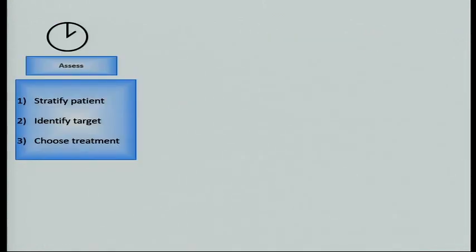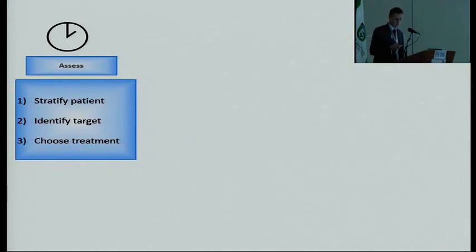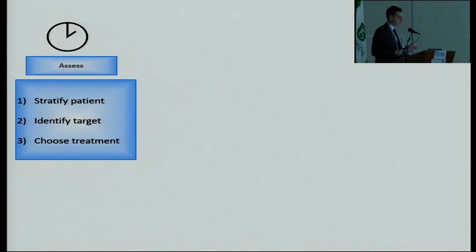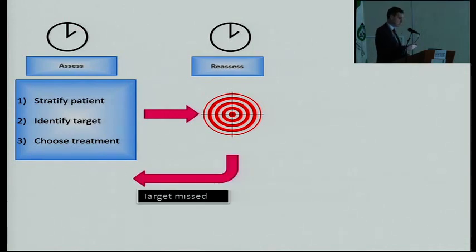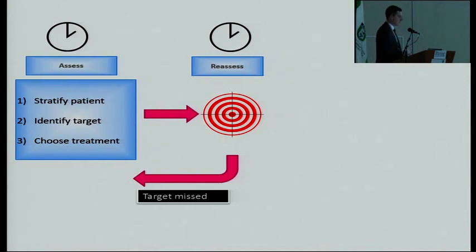Treating to target involves finding our patient and assessing them at the initial time point. We need to do three things: stratify the patient — understand their risk of developing progressive disease; identify a target to aim for; and choose a treatment to achieve that target. We then start treatment, and after a pre-specified interval we reassess. If we haven't reached the target, we go back to the beginning, identify the target again, choose another treatment, and repeat until we reach the target.